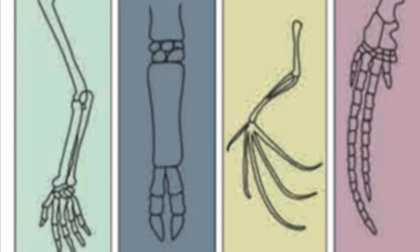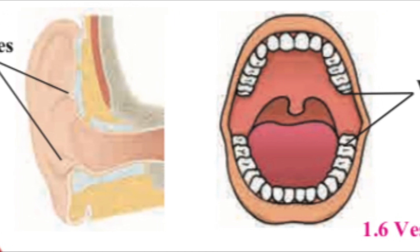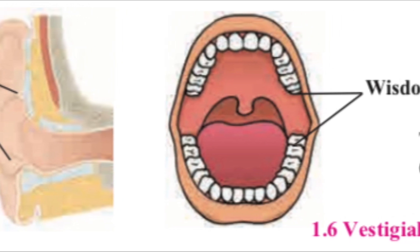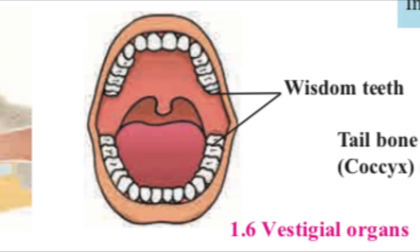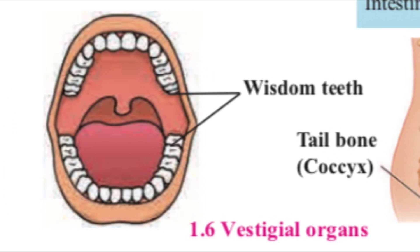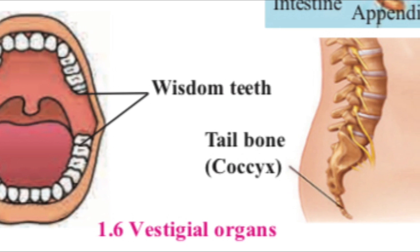Now, this picture tells us about anatomical evidence. If you carefully observe, there doesn't seem to be any superficial similarity between a human hand, a cat's foreleg, the flipper of a whale, and the wing of a bat. However, there is a similarity in the structure of bones and bony joints in these organs. Degenerated or underdeveloped useless organs are called vestigial organs. Examples in humans include ear muscles, tailbone, appendix, and wisdom teeth.